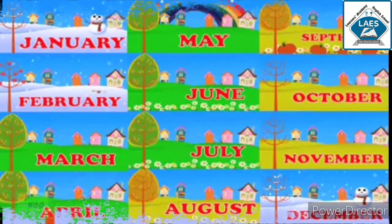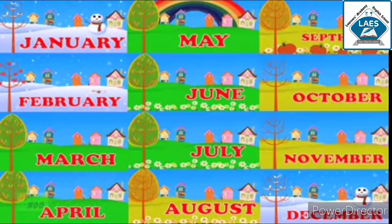Now, have a look at the spellings. First, January: J-A-N-U-A-R-Y, January. February: F-E-B-R-U-A-R-Y. Then March: M-A-R-C-H, March. Then April: A-P-R-I-L, April.